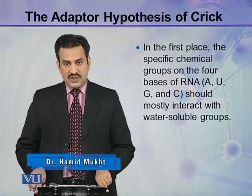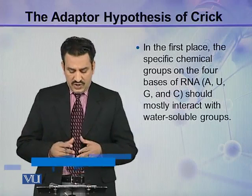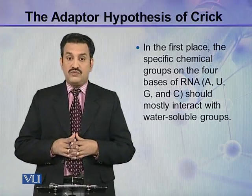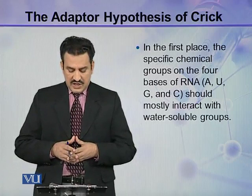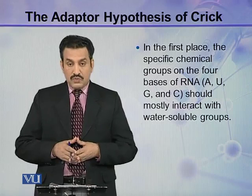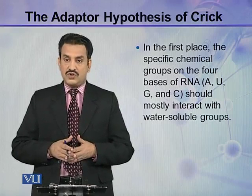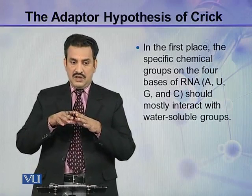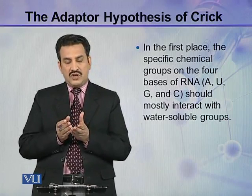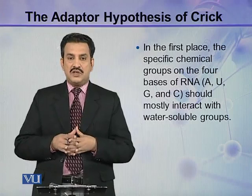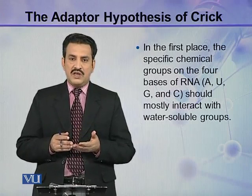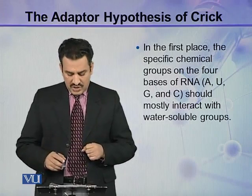In the first place, why would it never work? The specific chemical groups present on the four bases of RNA — that is adenine, uracil, guanine, and cytosine — should mostly interact with water-soluble groups. The substituents or atoms on these nitrogenous bases would prefer only interactions with water-soluble, hydrophilic groups.